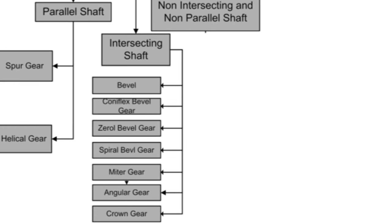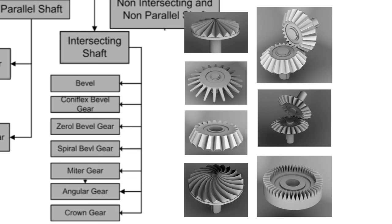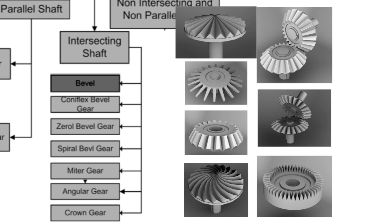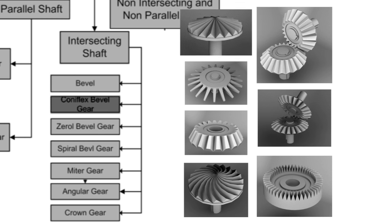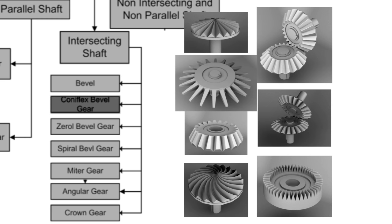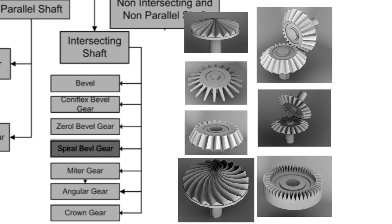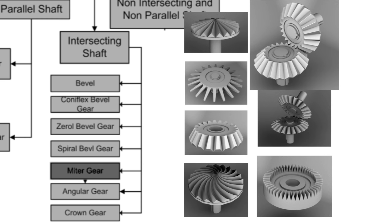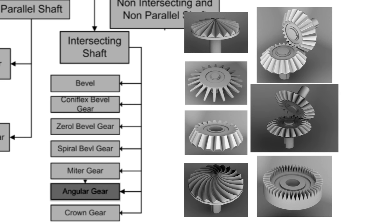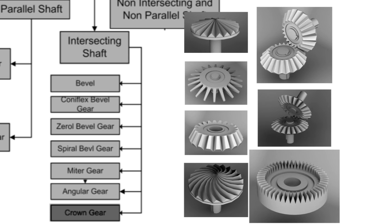Intersecting shaft gears are classified into the following groups: bevel gear, coniflex bevel gear, zero bevel gear, spiral gear, miter gear, angular gear, and crown gear.